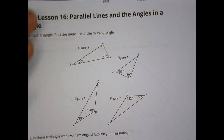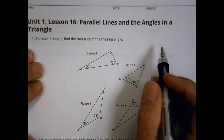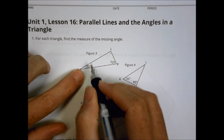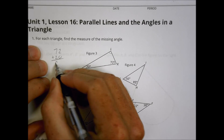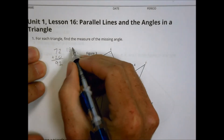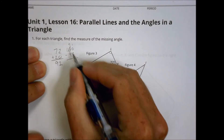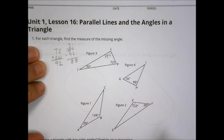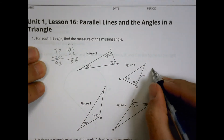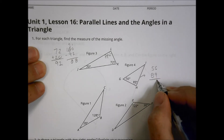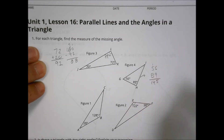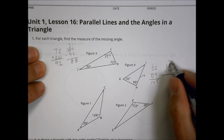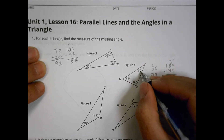Now let's look at your homework assignment: parallel lines and the angles in triangles. For each triangle, find the measure of the missing angle. First triangle: 72 plus 20 is 92, and 180 minus 92 gives us 88 degrees. Second triangle: 56 plus 89 is 145, and 180 minus 145 gives us 35 degrees.